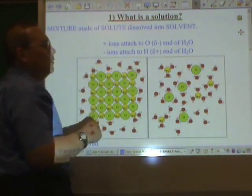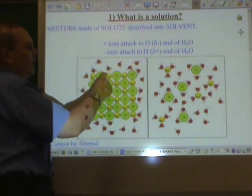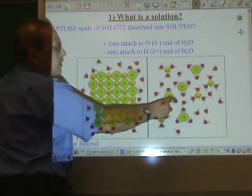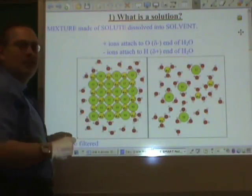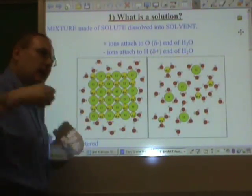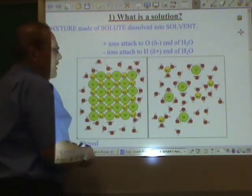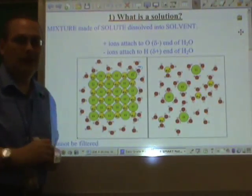The partially positive end of the water molecule, the hydrogen, is attracted to the negative ions, which is why we have these negative chloride ions with the hydrogen end of the water molecules surrounding them. Water molecules attach themselves to the ions, and because water molecules are constantly moving, their motion will actually cause the ions to separate from each other and pull away, dissolving.